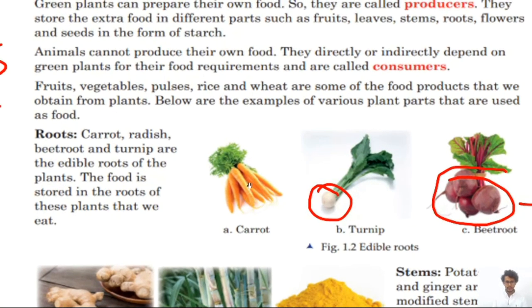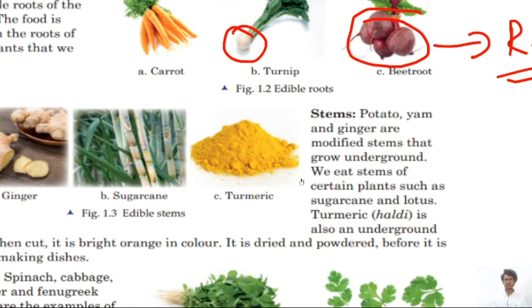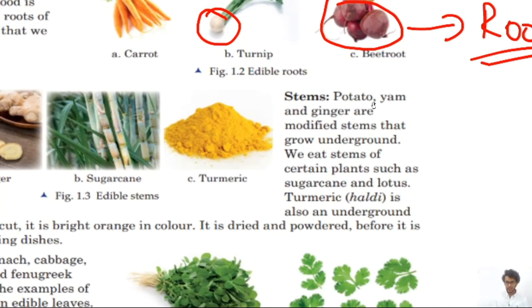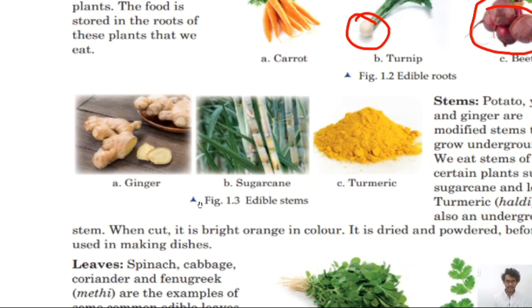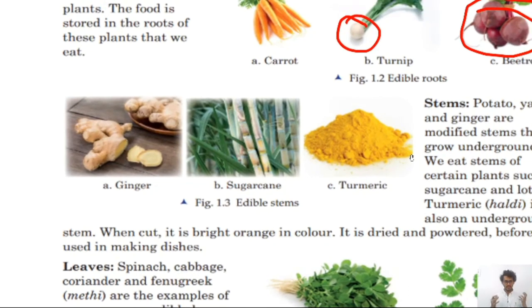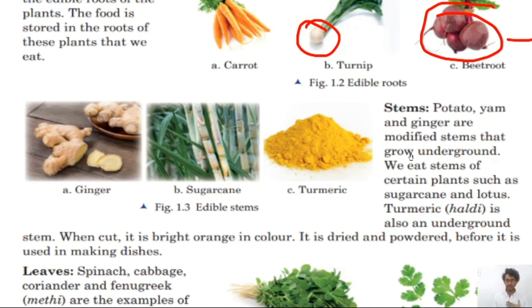Stem: potato, yam, and ginger are modified stems that grow underground. I hope you all know what a potato is — potato is a stem. Ginger, also known as adrak, is also a stem. We eat the stem of potato, ginger, and yam.